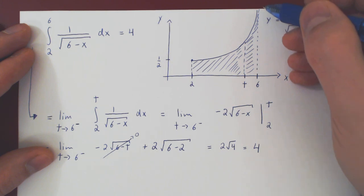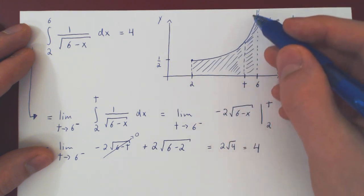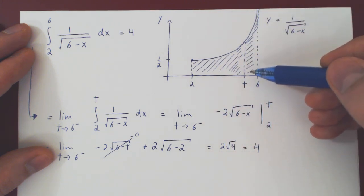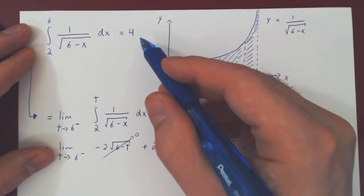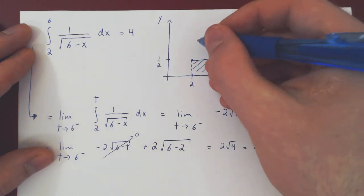since we have a vertical asymptote here, the curve shoots up to positive infinity, we have this infinitely high region, it still has a finite area that is exactly equal to 4.